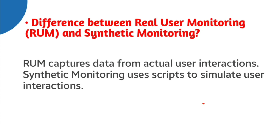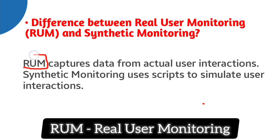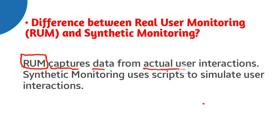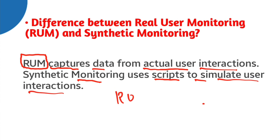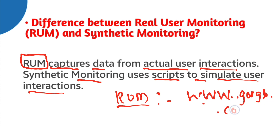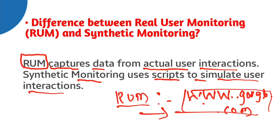Next question: what is the difference between Real User Monitoring and Synthetic Monitoring? RUM captures data from actual user interactions. For example, if someone logs into www.google.com and searches for Dynatrace videos, whatever that user does is captured by Dynatrace. Synthetic monitoring uses scripts to simulate user interactions.